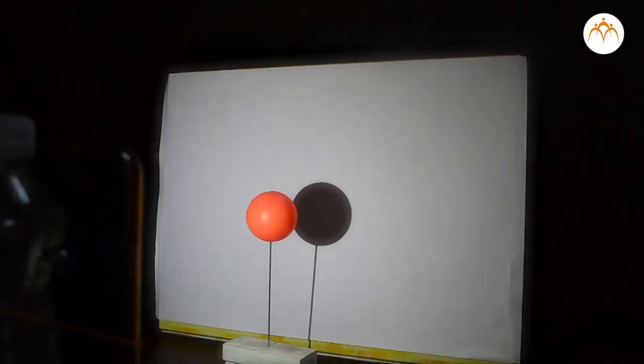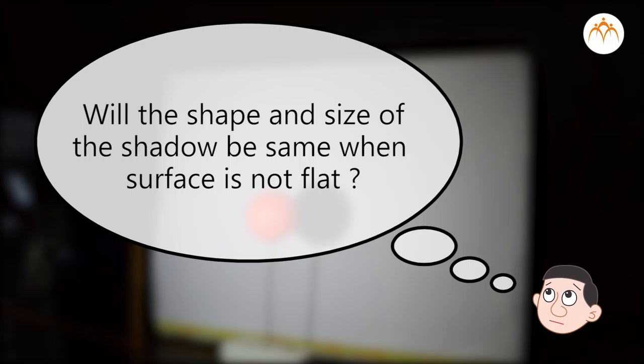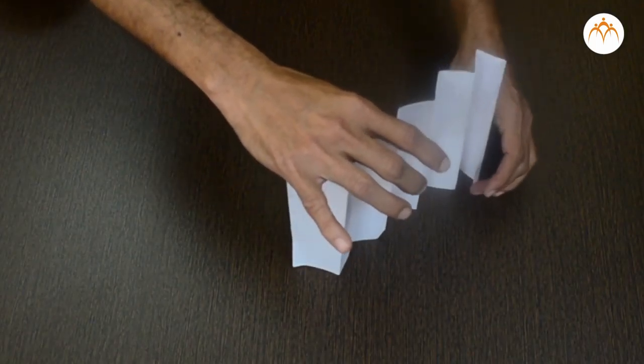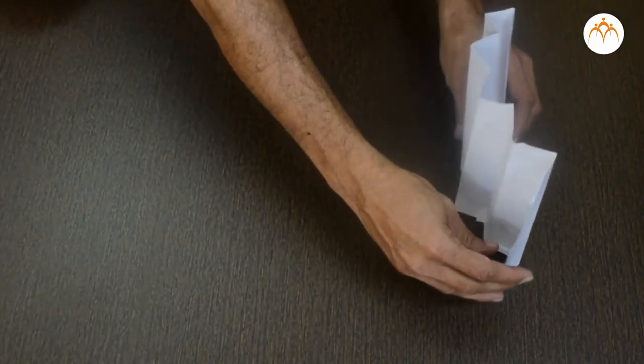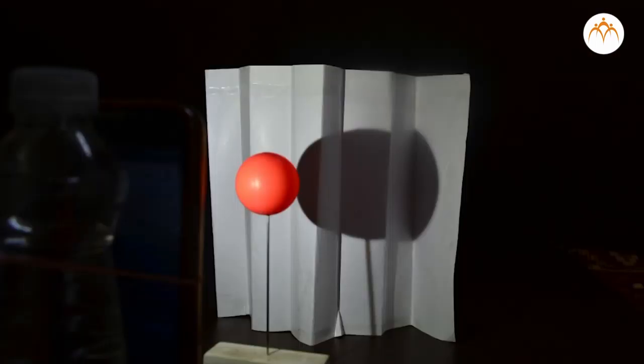A weak or soft light will produce a shadow with a more blurry edge. That is the reason you don't see a clear shadow on a cloudy day. We looked at shadow when surface behind the object is flat.